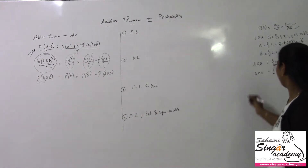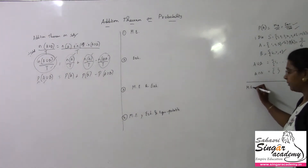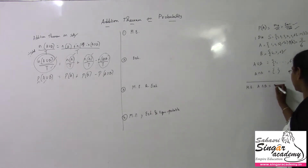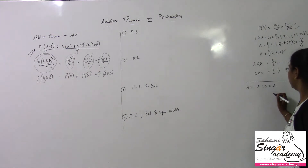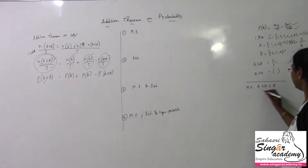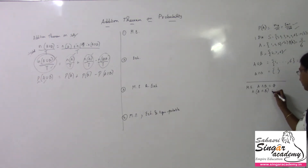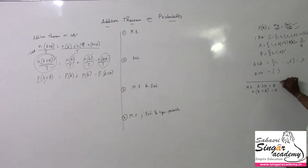Recall: when I say mutually exclusive, if A appears, B does not appear. So A ∩ B = null set — they are disjoint sets.